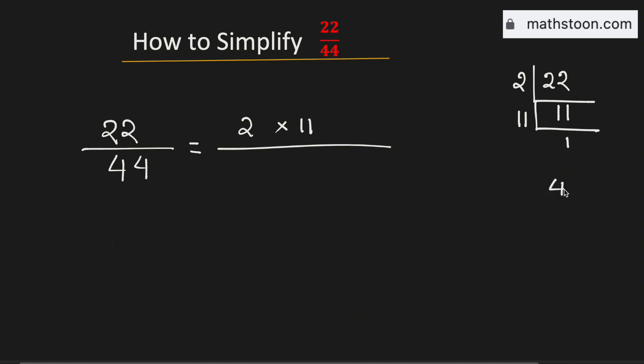And for 44, we know that it goes by 2 and we get 22. And again, 22 is divisible by 2 and we get 11, and 11 is divisible by 11 only and we get 1 here. So 44 is written as a product of these numbers, that is 2 times 2 times 11.